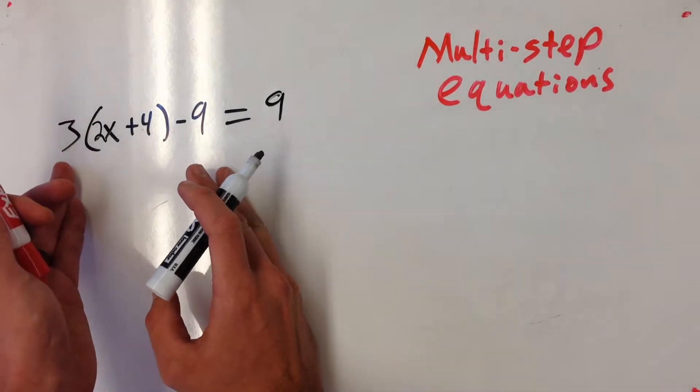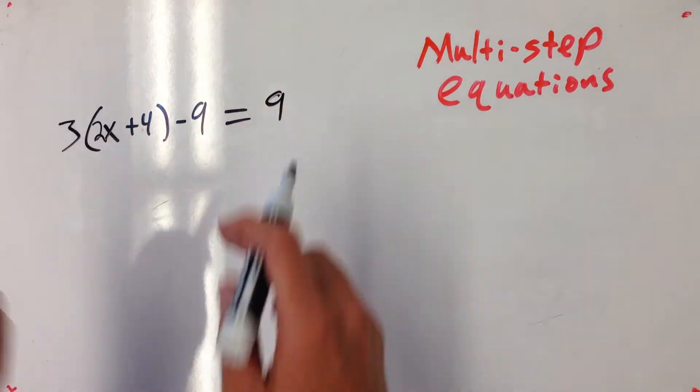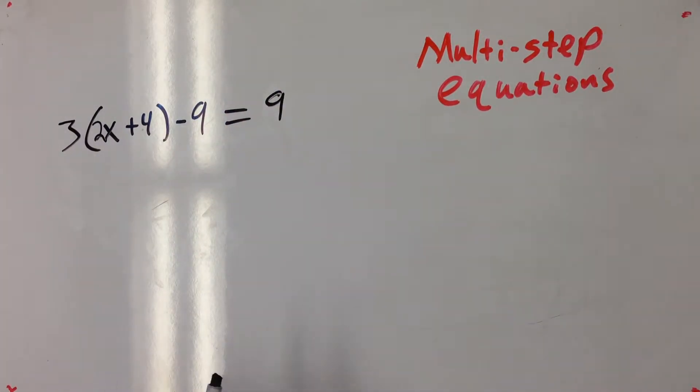So look at this left side, it's very complex over here. We've got 3 times 2x plus 4 and then we also have this minus 9 thing. There's a lot of different ways to solve this, so if you see a way that's different than how I'm doing it, you're not necessarily wrong, my way's not the only way.